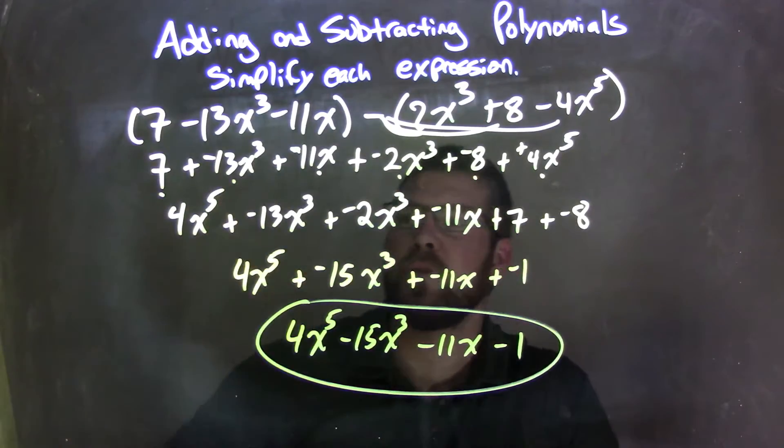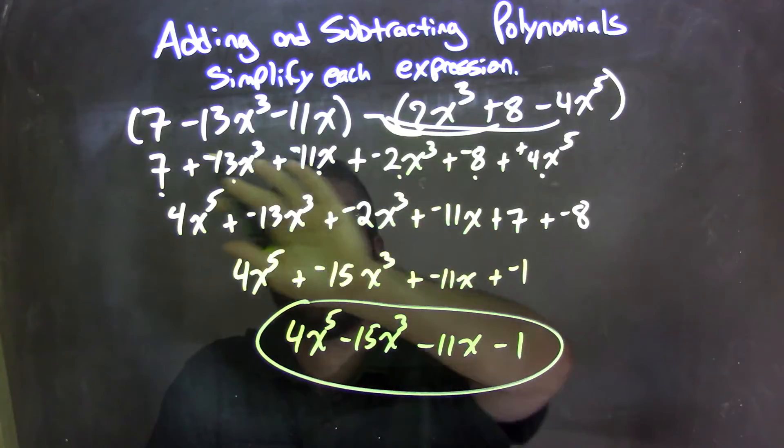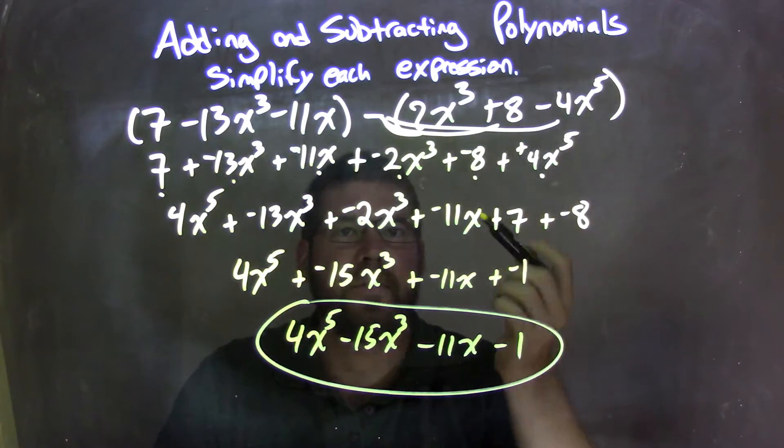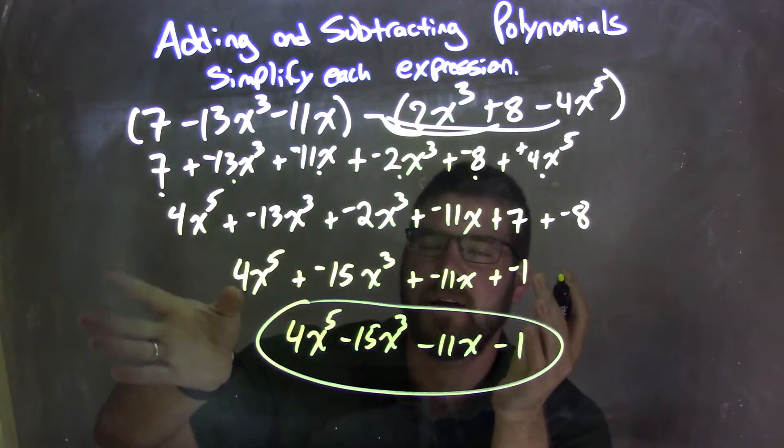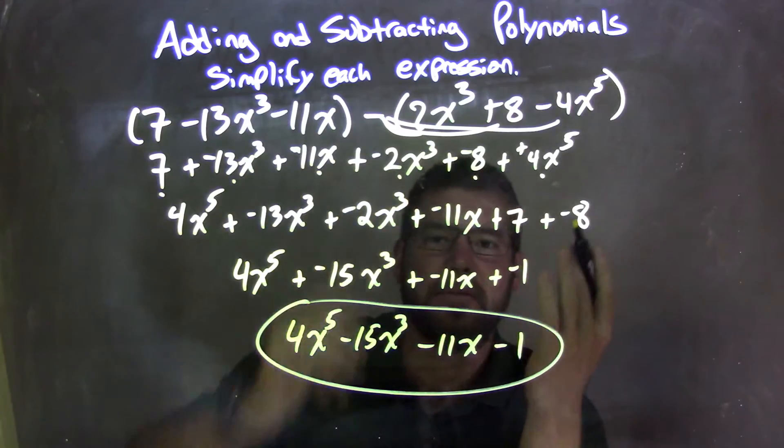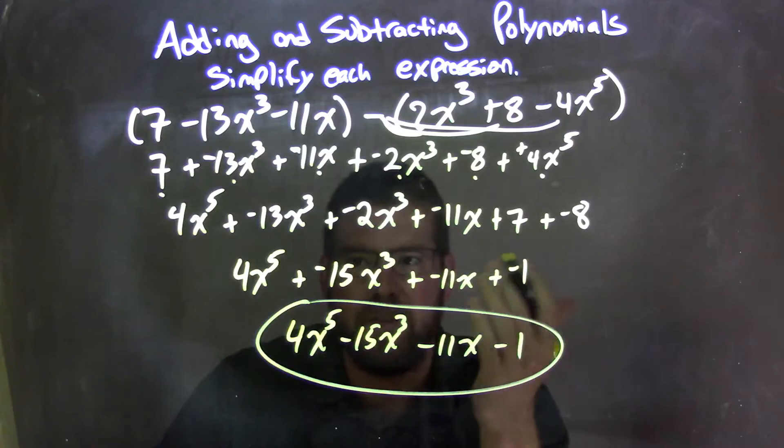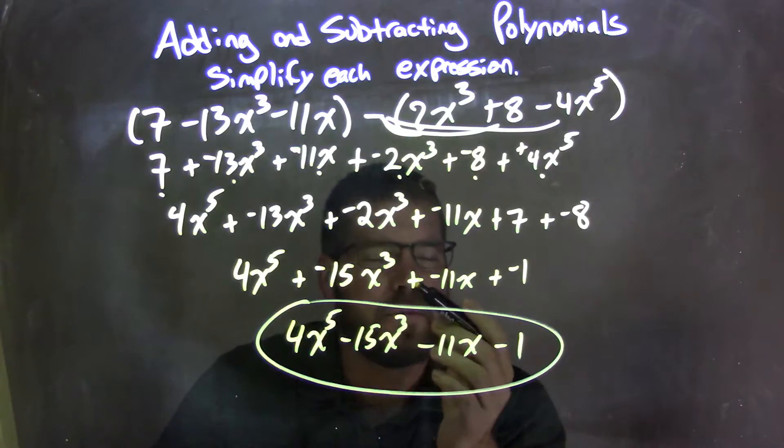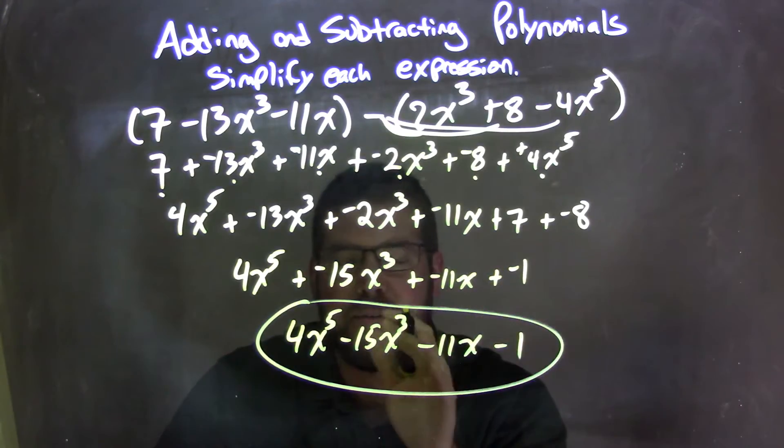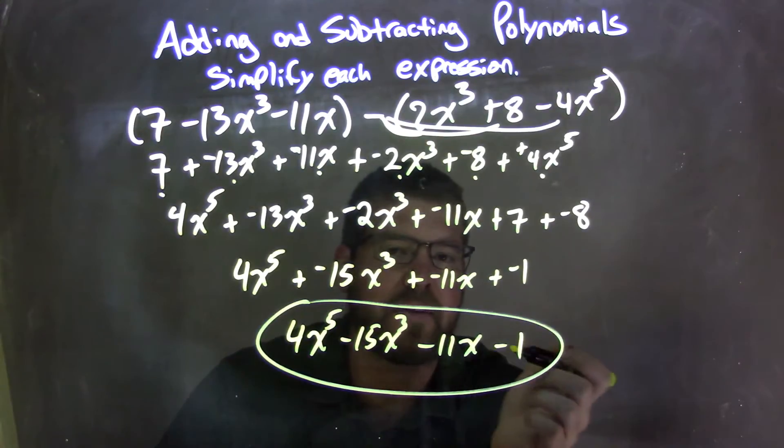So let's recap. We have 7 minus 13x to the 3rd minus 11x, parentheses minus parentheses 2x to the 3rd plus 8 minus 4x to the 5th. I made everything adding a negative and distributed the minus sign. Then I rearranged my highest degree first, like terms together. And then I used the dot method here to double check, make sure I brought everything down. Then I combined my like terms. And after I combined my like terms, I made my adding a negative to subtractions. And our final answer here being 4x to the 5th minus 15x to the 3rd minus 11x minus 1.